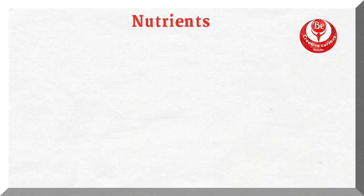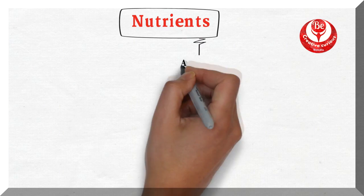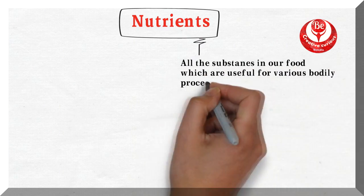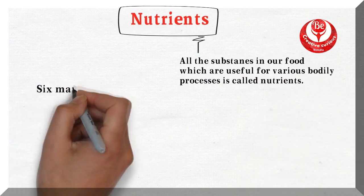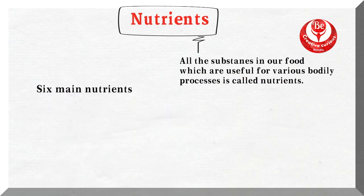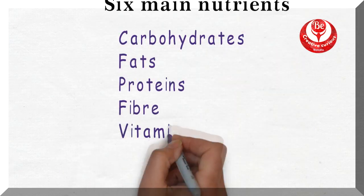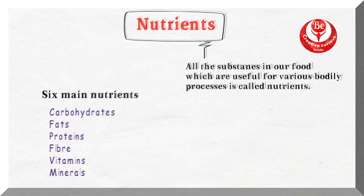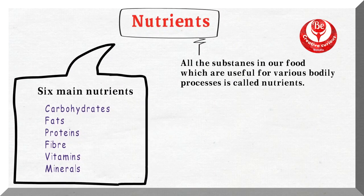What are nutrients? All the substances in your body which are useful for various bodily processes are called nutrients. There are six important nutrients present in different foods: carbohydrates, fats, proteins, fiber, vitamins, and minerals.